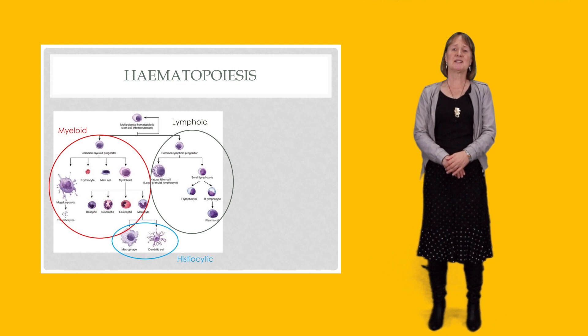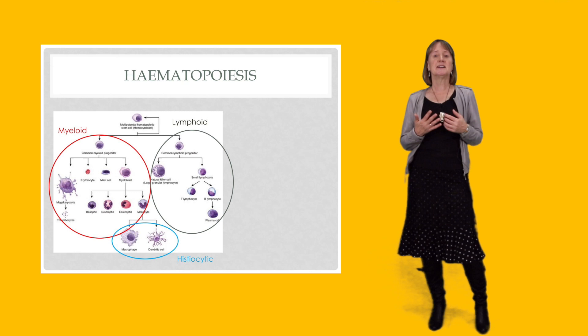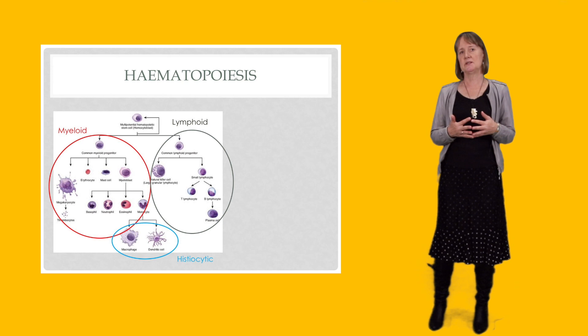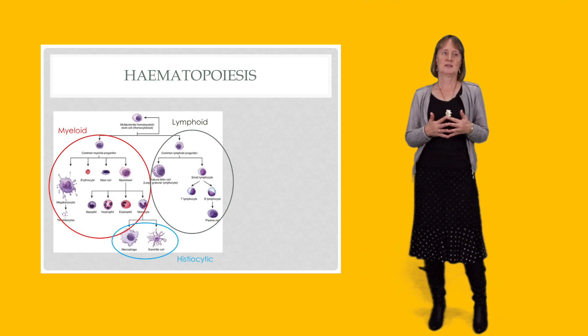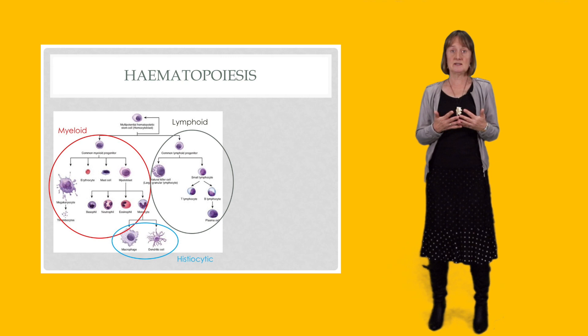So the first concept I'd like to talk about is lineage. The diagram here is a diagram of normal blood cell production and it's really helpful to spend a bit of time on this because it does help us understand abnormal blood cell production. So at the top we've got a multi-potent hemopoietic stem cell.